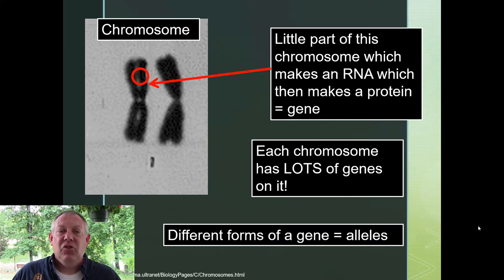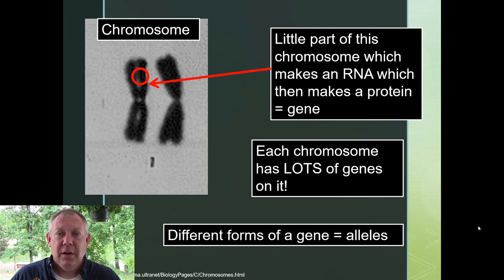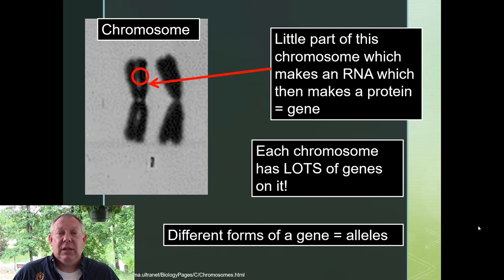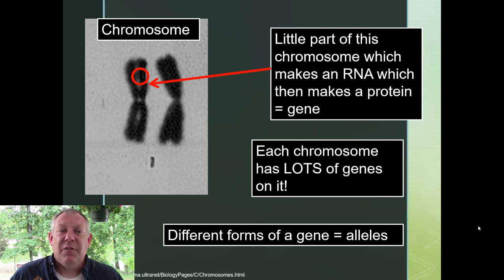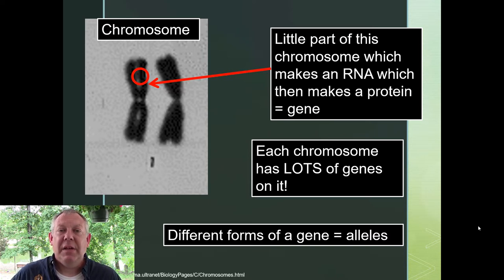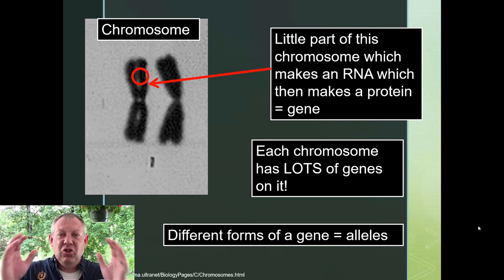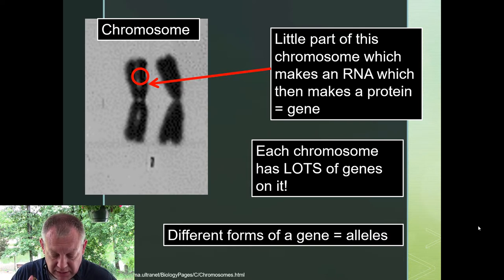Different forms of the same gene are called alleles, and we need to make sure we're using vocabulary properly. For a very simplified example, you might have a gene that determines the color of your eyes. There are different forms of that gene — some forms make blue eyes, some forms make brown eyes, some forms make green eyes. Combinations of those alleles can give different combinations of colors. They're all the same gene, but there are different forms of that gene. That's what an allele is.